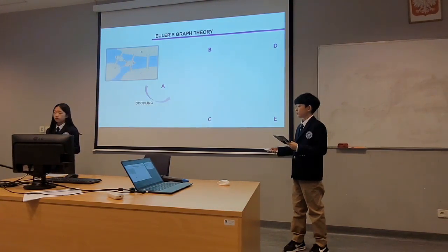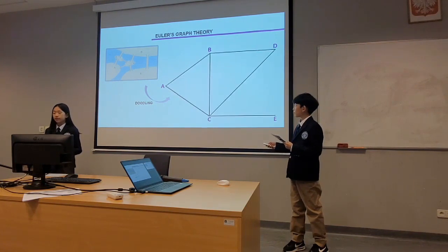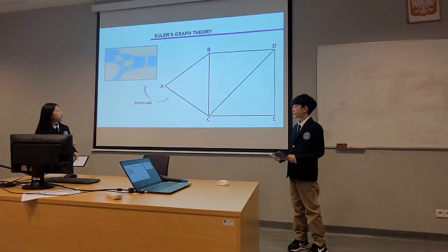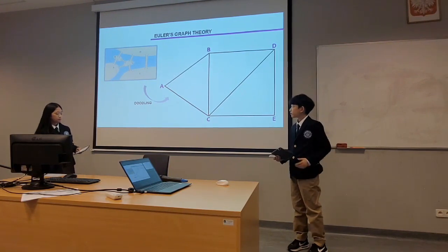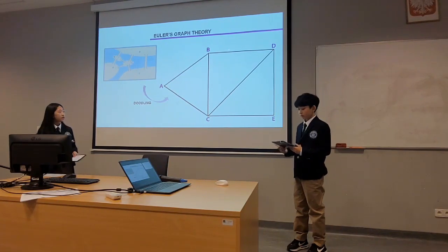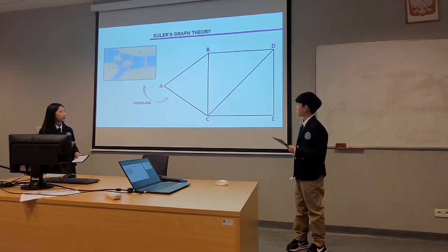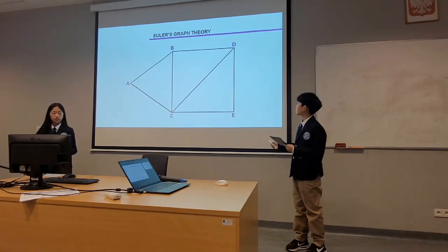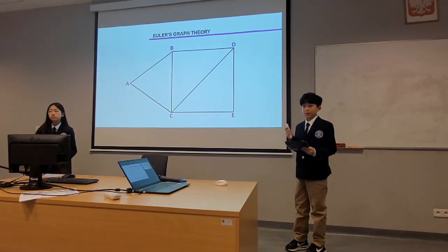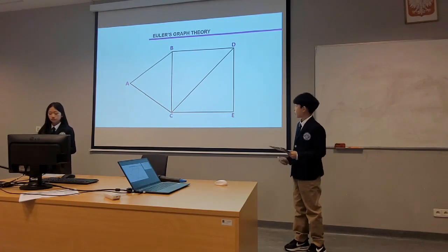I tried to show the figure as a simplified graph like Euler did. Each point is represented by a dot and each bridge is represented by a line. Since there are seven bridges, there are seven lines connecting points A, B, C, D, and E. So if we represent this figure as a one-brush drawing, it is as follows.